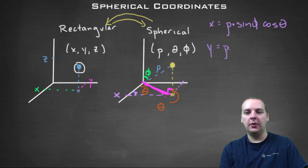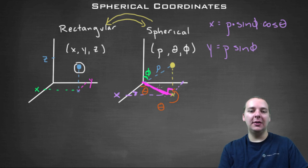So I'll copy that down, rho sine phi. But this time, instead of being adjacent over hypotenuse, because it's opposite over hypotenuse, we have sine of theta, as opposed to cosine of theta.